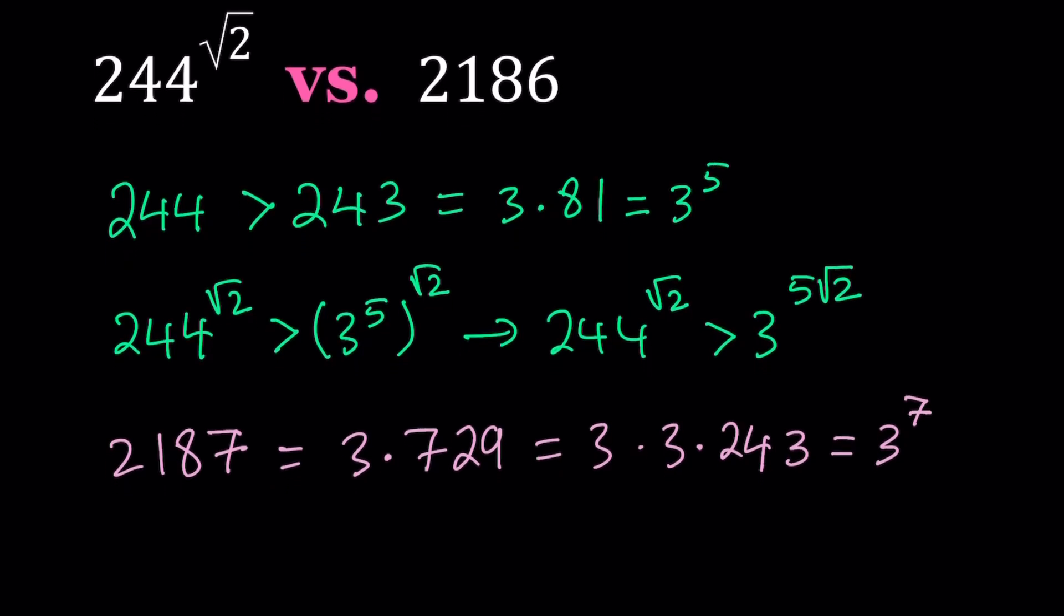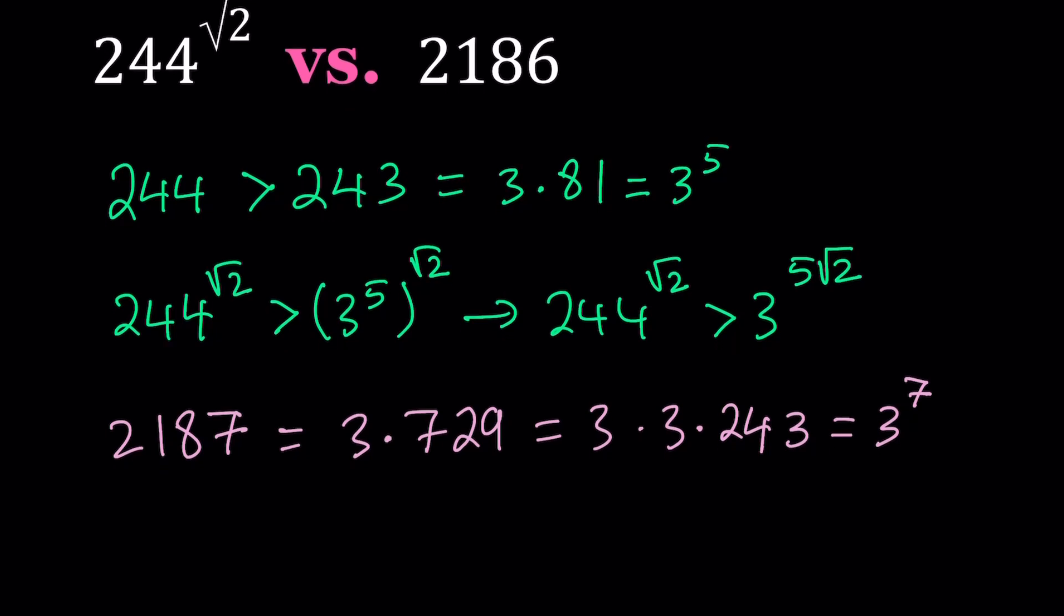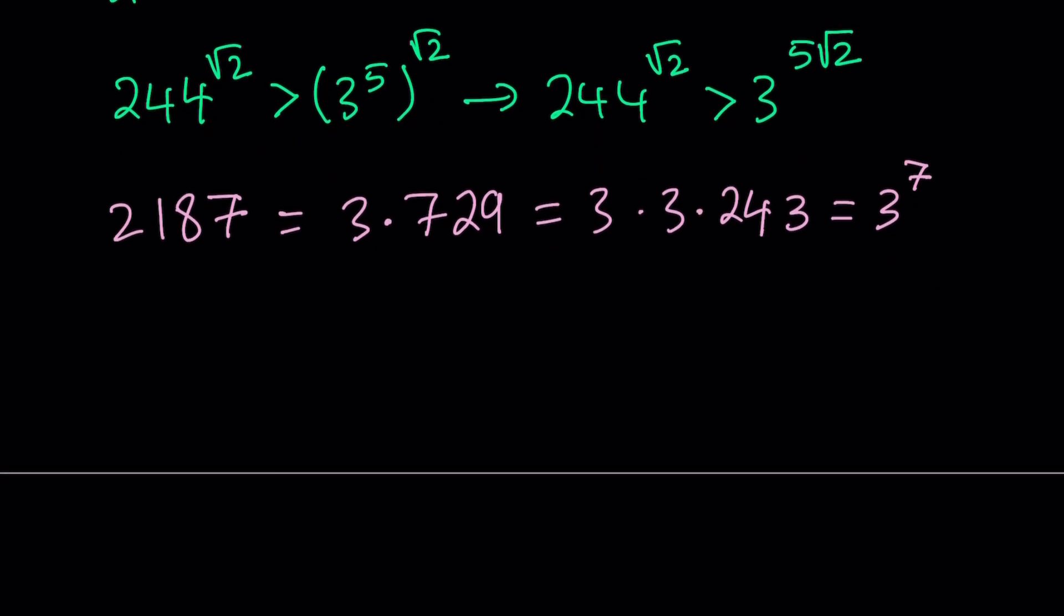So now we did establish something for 2,187, but we do need 2,186, which is pretty close. So let's go ahead now and write down the obvious statement. 2,187 is greater than 2,186. This implies what?